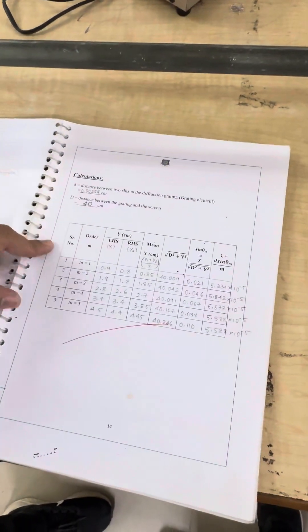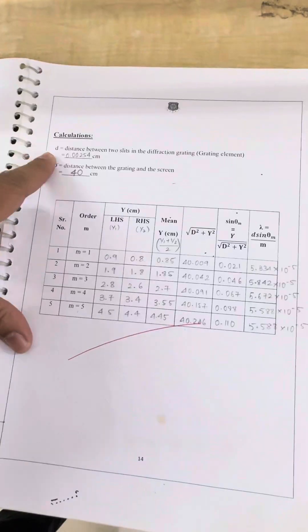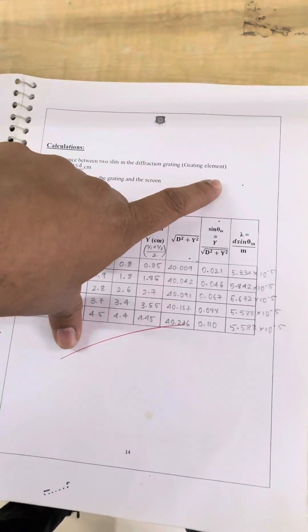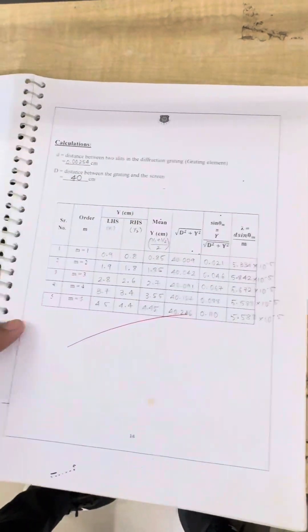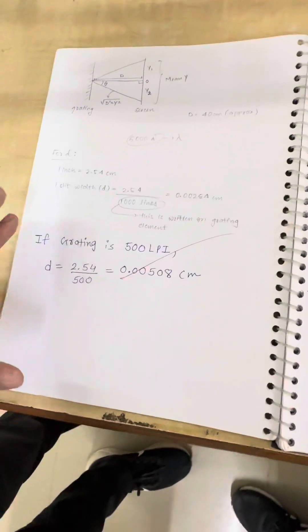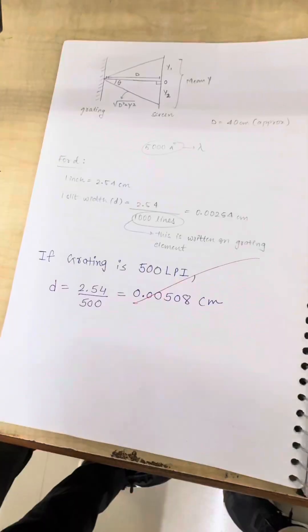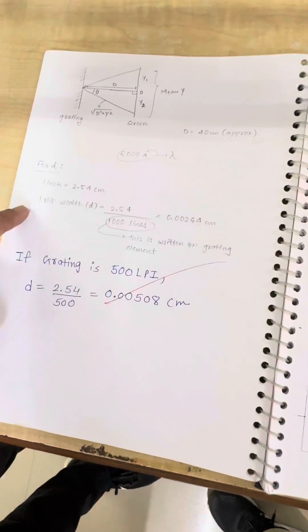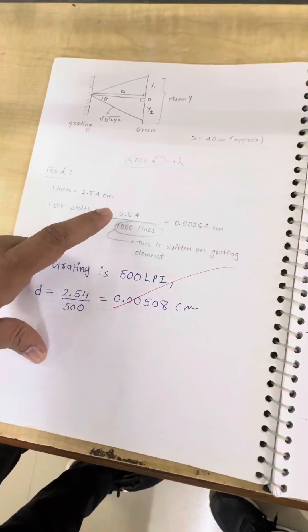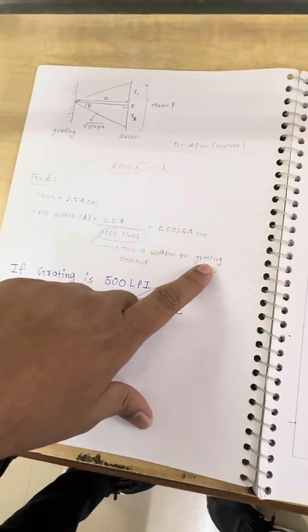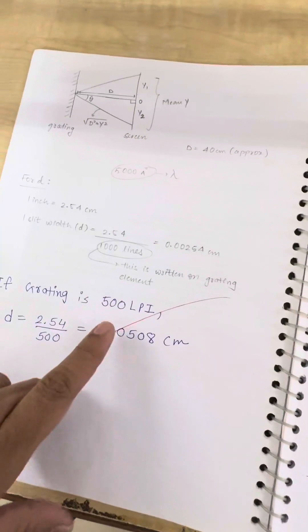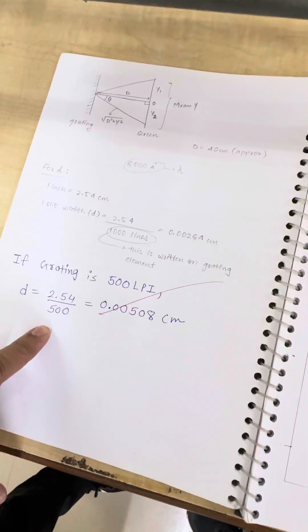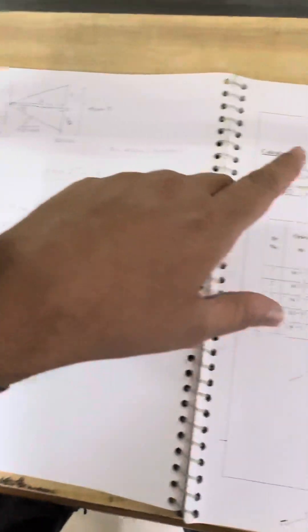Now let's see the calculation. So small d is nothing but the distance between two slits in the diffraction grating or grating element. So we have used the grating element of 1000 LPI. 1000 LPI means 1000 lines per inch. So 1 inch equals 2.54 cm. So 1 slit width will be 2.54 divided by 1000 in cm. If you are using LPI of 500, then you can calculate 2.54 by 500 in a similar manner. So we obtain the value of d.